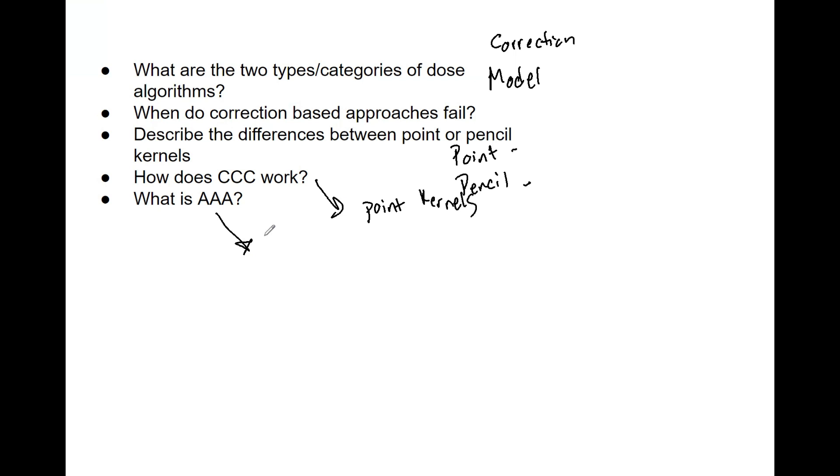As I mentioned, pencil kernel in itself isn't as accurate as point kernel, but then this algorithm with that 3D pencil beam and the additions of the Monte Carlo kernels can not only be faster, but it's still very accurate.